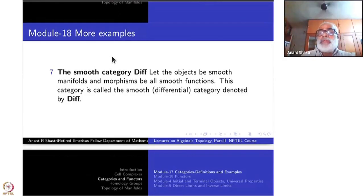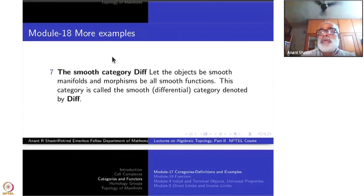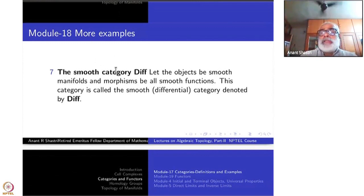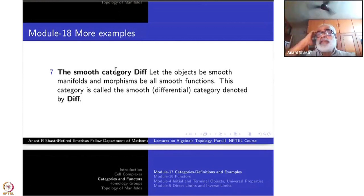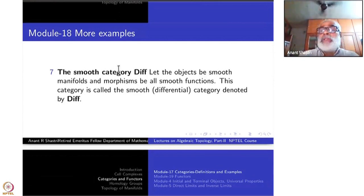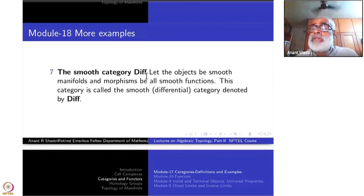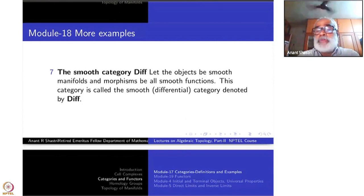We shall now continue to give some more familiar examples of categories. We studied the topological category, the homotopy category, the simplicial category, and the CW category. One more important category for topology is the smooth category, denoted by DIFF by me, though other people may denote it slightly differently — notation is not all that uniformized.